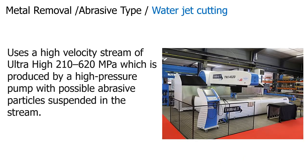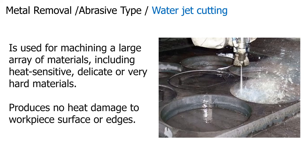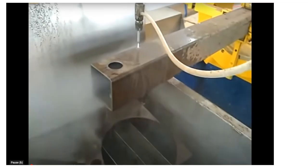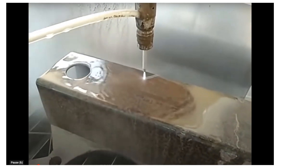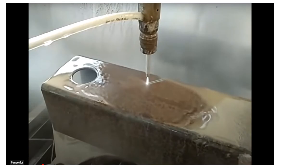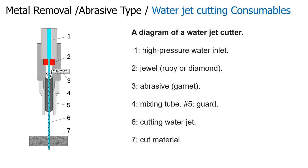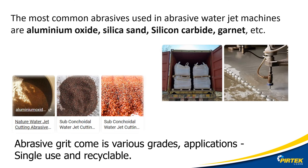Water jet cutters utilize high-pressure water mixed with abrasive particles to wear away material. They are useful for cutting hard and heat-sensitive materials. As we can see from the diagram, the water and abrasive particles are mixed together in the mixing tube ahead of an abrasive-resistant diamond or ruby nozzle. The appropriate abrasive grit needs to be selected for the application; abrasive grit can be recyclable or single-use.